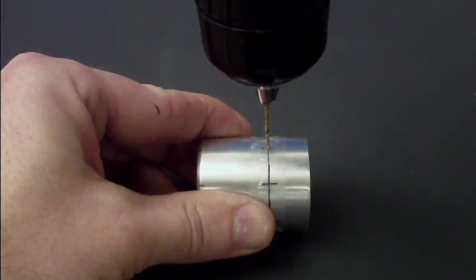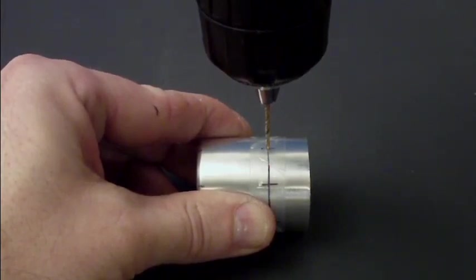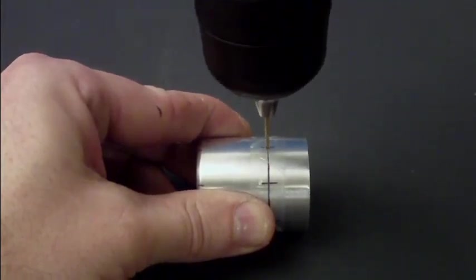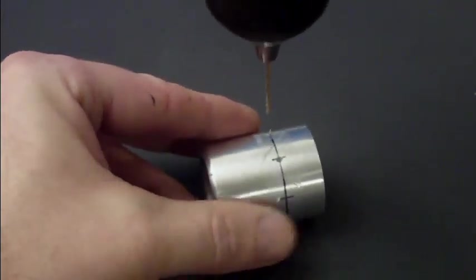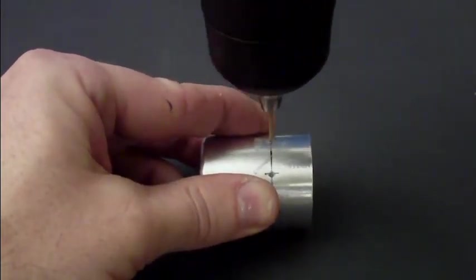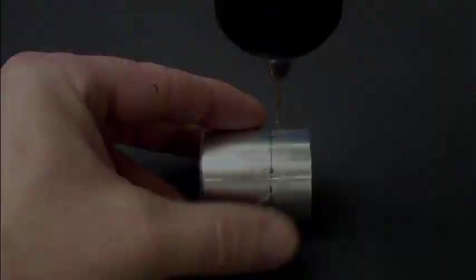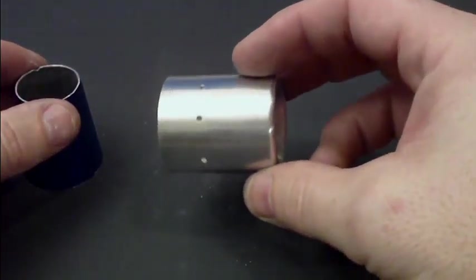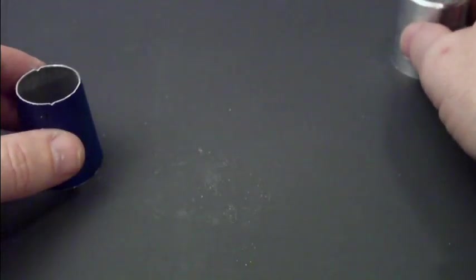Okay, next using a 1/16th inch drill bit, go ahead and just proceed to drill your holes out. Now with the exterior of our stove complete, we can go ahead and just set that off to the side here.